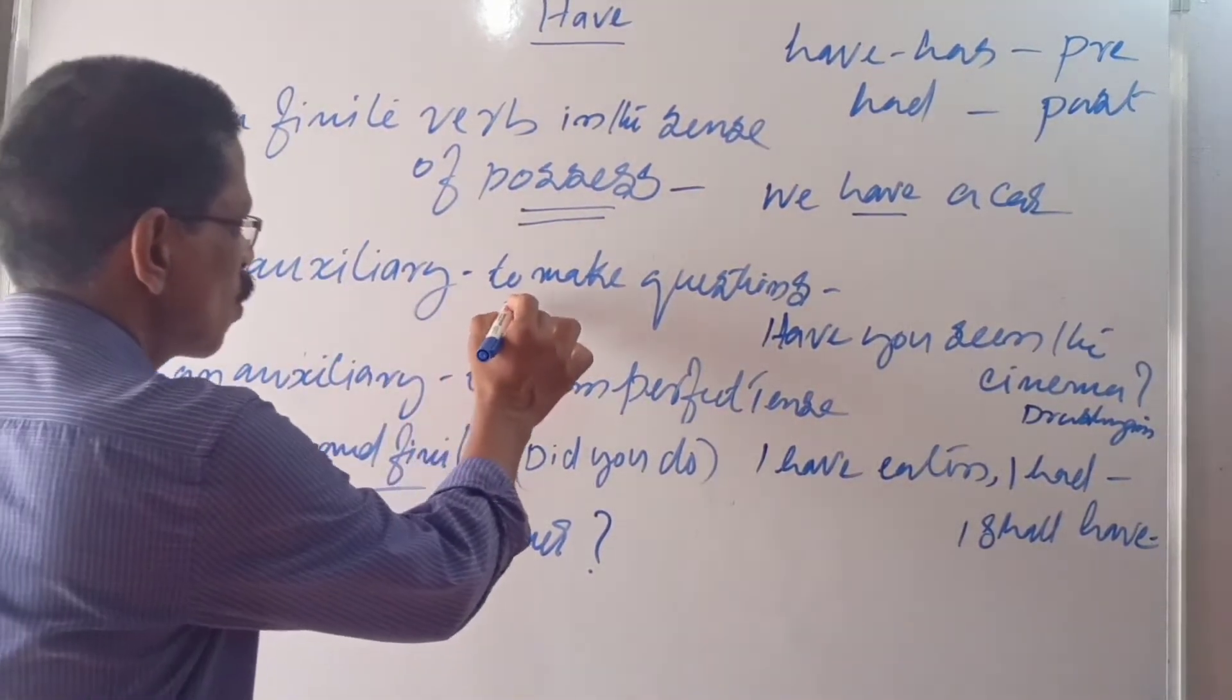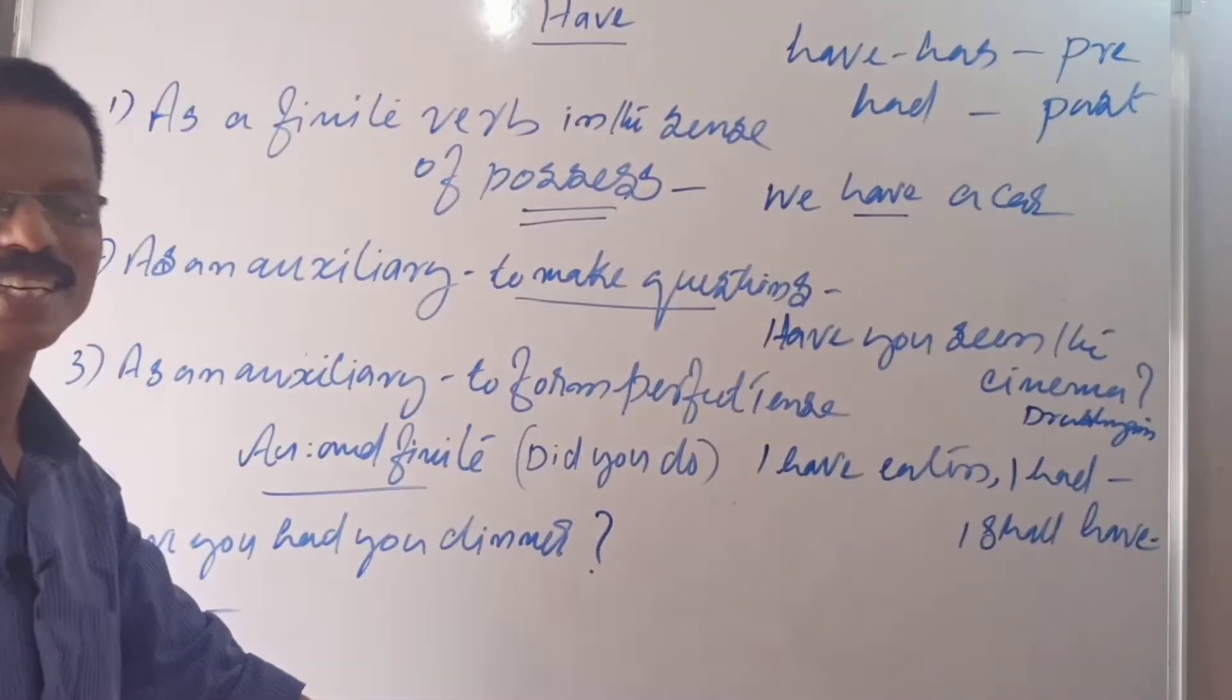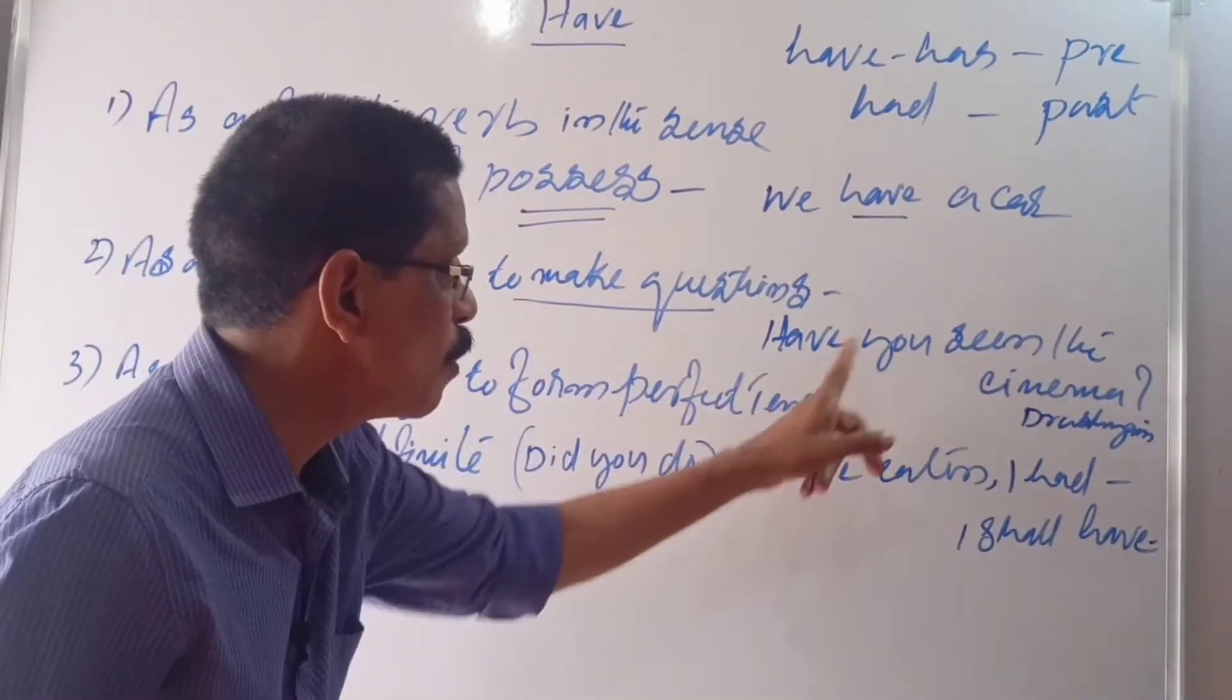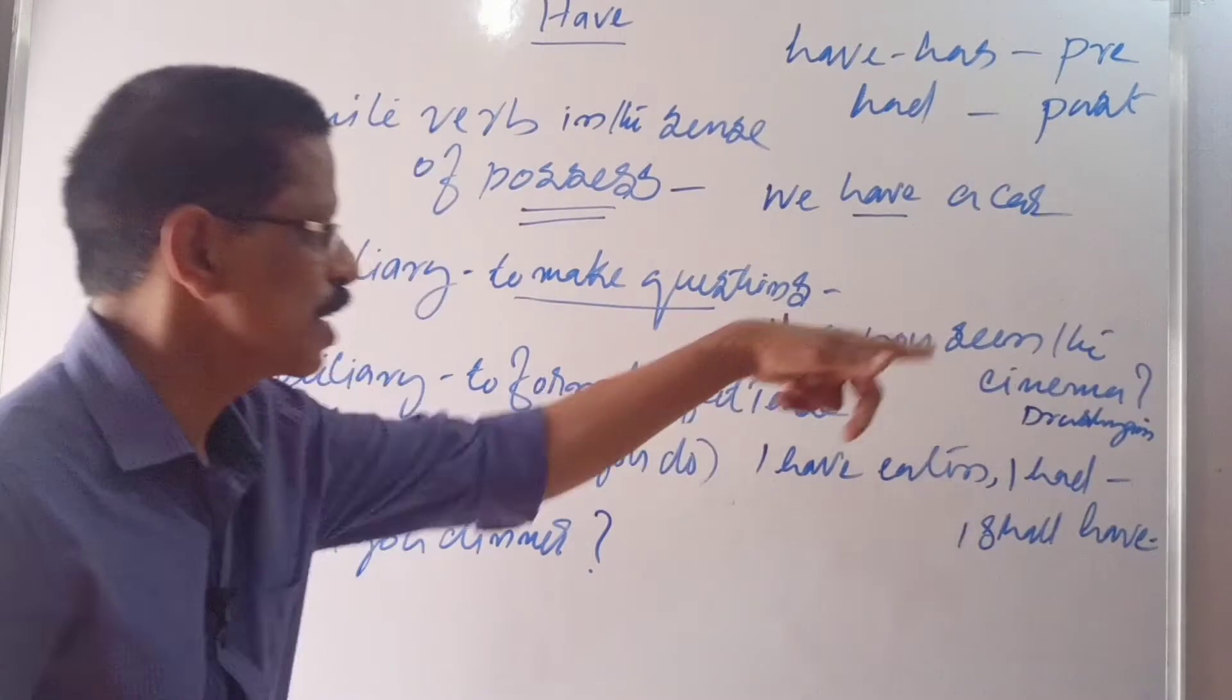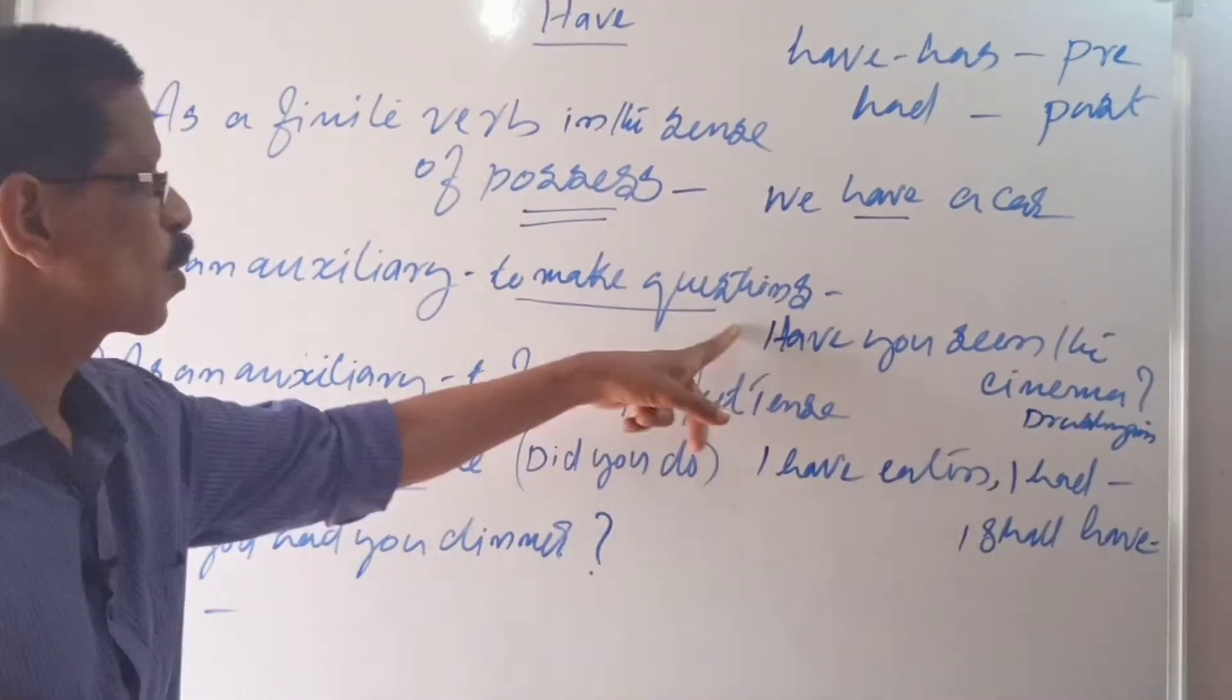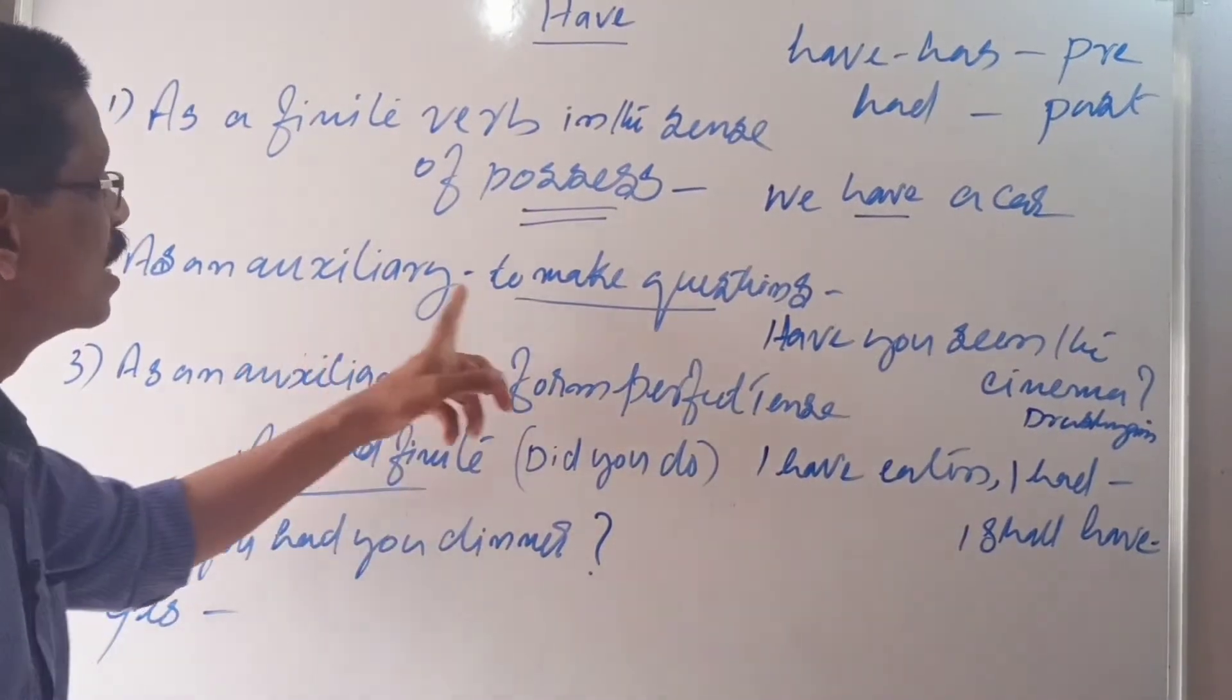Second one, as an auxiliary to make questions. Have you seen the cinema Drishyam? Have you seen the cinema? Nice cinema. You can see once if you get time. Have you seen. Here it is auxiliary. This is a verb. Have seen is a verb. This is auxiliary, this is finite.